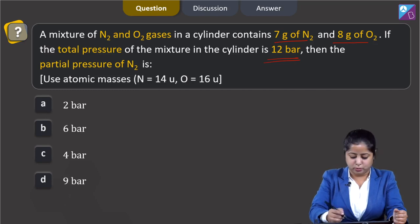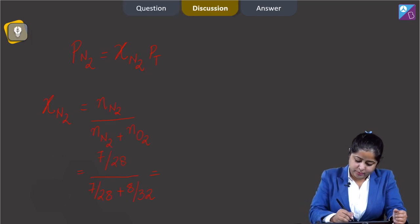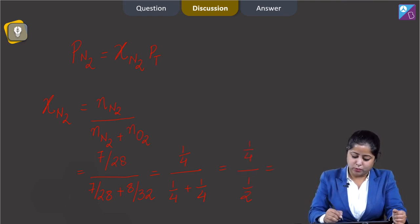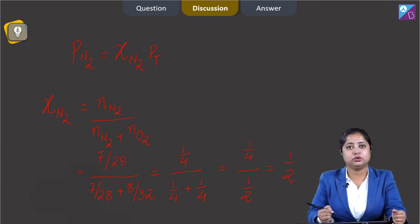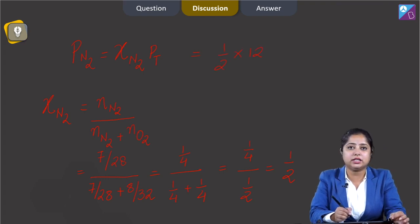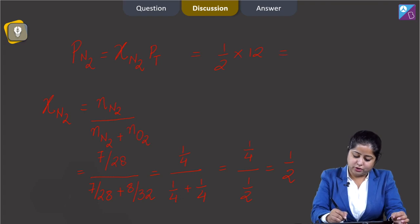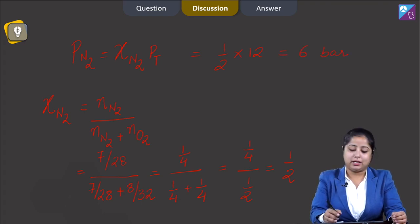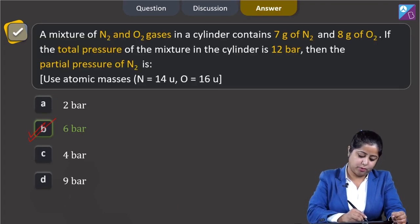So here 7 upon 28 plus the given mass of O2 is 8 and its molar mass is 32. It will be 1 upon 4 plus 1 upon 4, which equals 1 upon 2. Let us put the value of mole fraction: 1 upon 2 into 12, which equals 6 bar. The correct answer is option B.